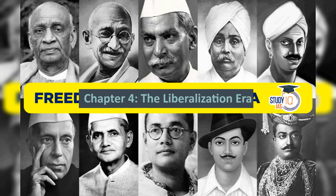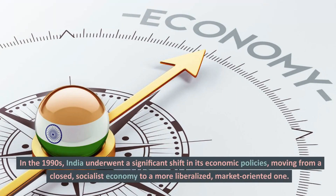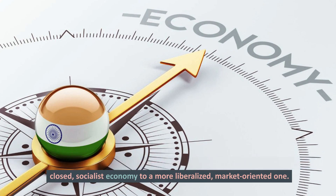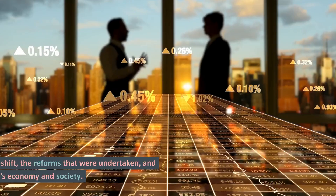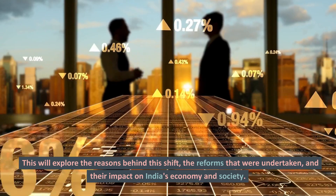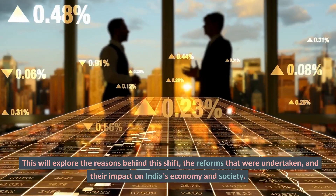Chapter 4: The Liberalization Era. In the 1990s, India underwent a significant shift in its economic policies, moving from a closed, socialist economy to a more liberalized, market-oriented one. This chapter will explore the reasons behind this shift, the reforms that were undertaken, and their impact on India's economy and society.